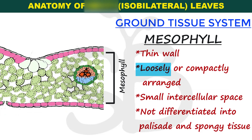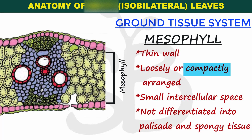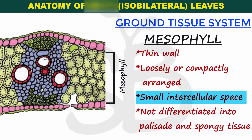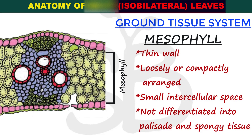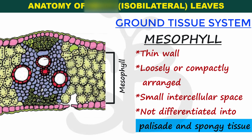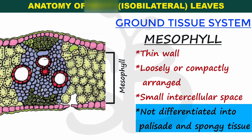In grass plants, the mesophyll cells are loosely arranged. In other monocot plants, they may be compactly arranged. There is also intercellular space — small intercellular space. Because the monocot leaf is an isobilateral leaf, the mesophyll is not differentiated into palisade tissue and spongy tissue.